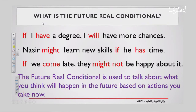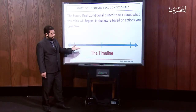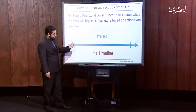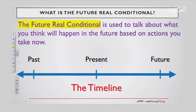So what is the Future Real Conditional? The Future Real Conditional is used to talk about what you think will happen in the future, based on actions — like study, like drive, like eat. You take the present action now, and the result is in the future. So we have two things to think about: now and the future.